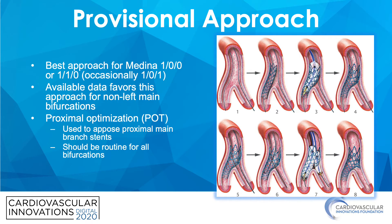The provisional approach is the best approach for Medina 1,0,0; 1,1,0; and occasionally 1,0,1. Available data favors this for non-left main bifurcations, and it's important to always use a proximal optimization technique to appose the proximal main branch stent. This should be routine for all bifurcations.